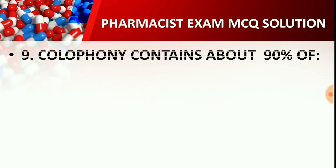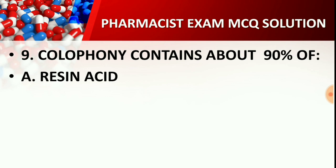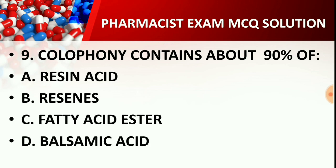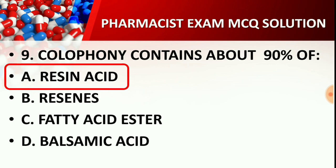Question number 9: Colophony contains about 90% of which constituent? Option A: Resin acid, Option B: Resins, Option C: Fatty acid ester, Option D: Balsamic acid. The correct answer is Option A — Resin acid. Colophony contains about 90% resin acid.